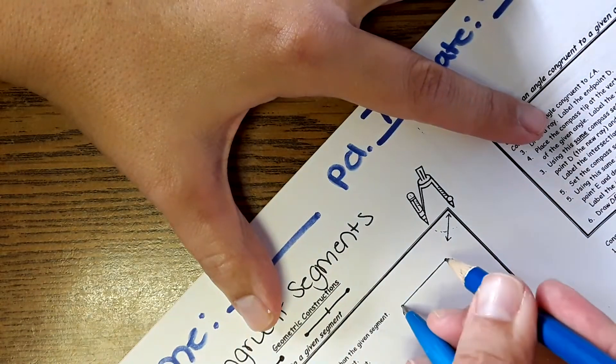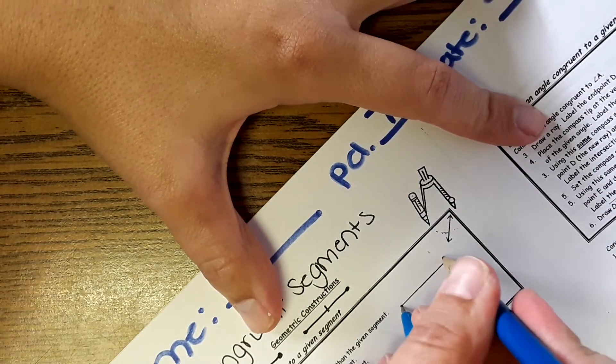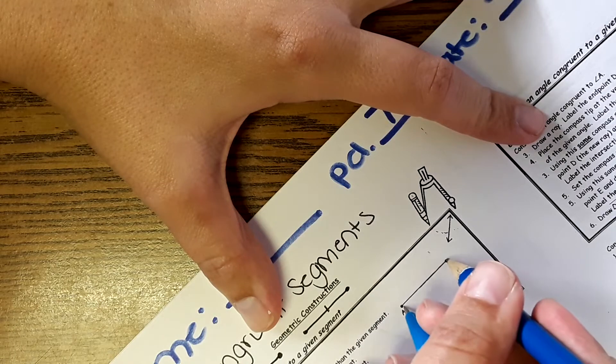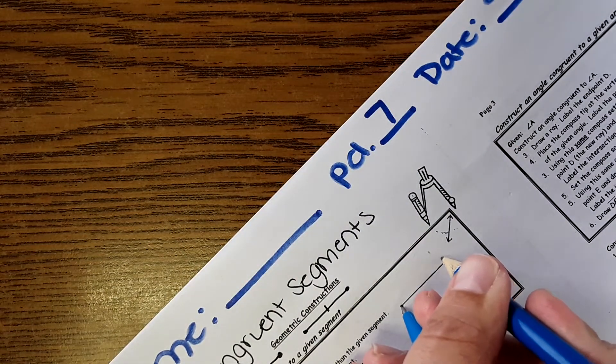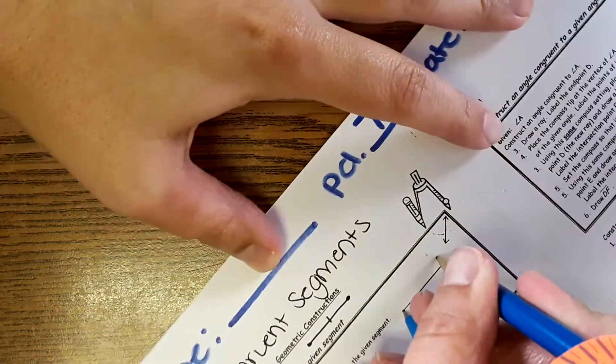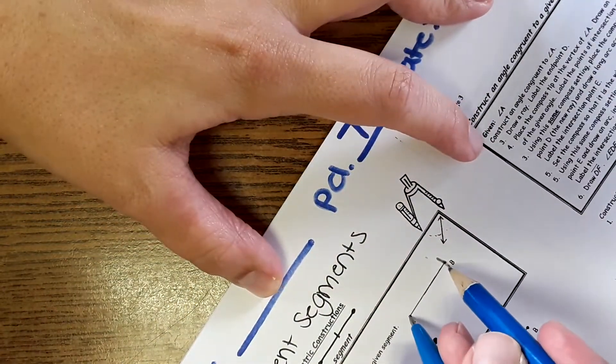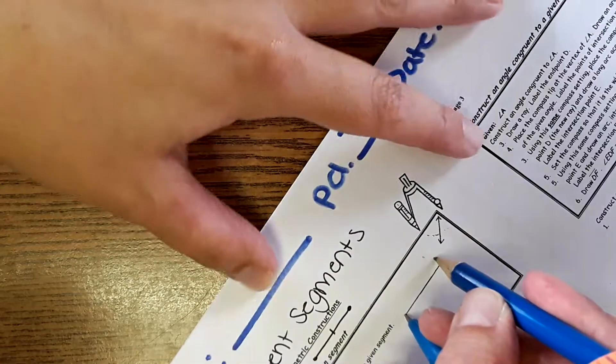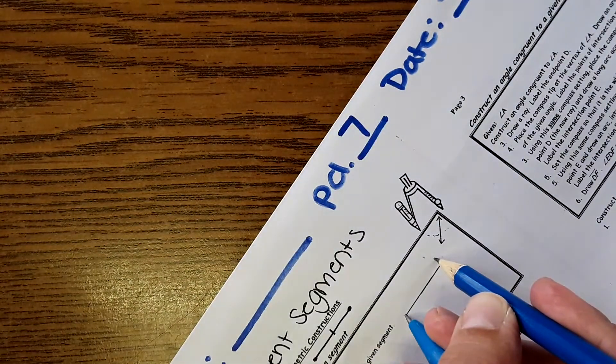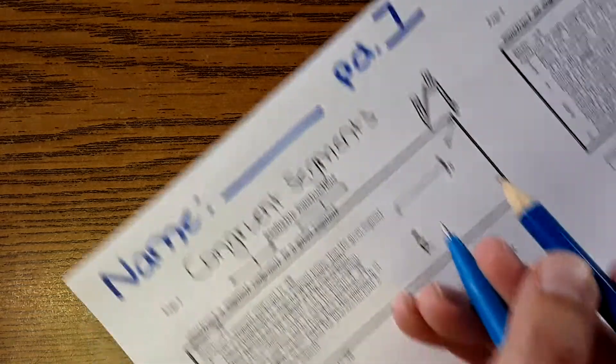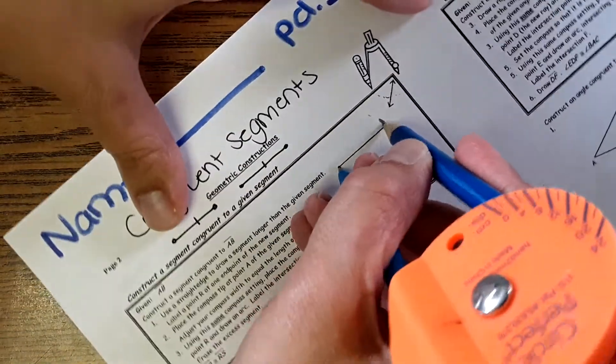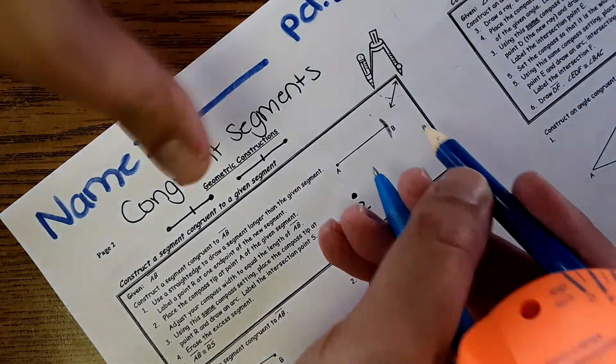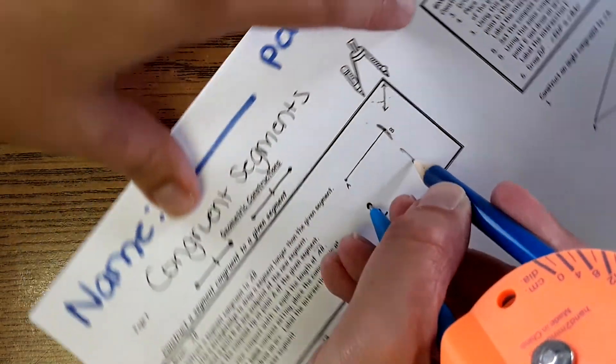Now we need to measure the distance between A and B with our compass. So adjust your compass so it's the length of AB and then make a little arc at B. Then take that same measurement, put it on point R, and make an arc.